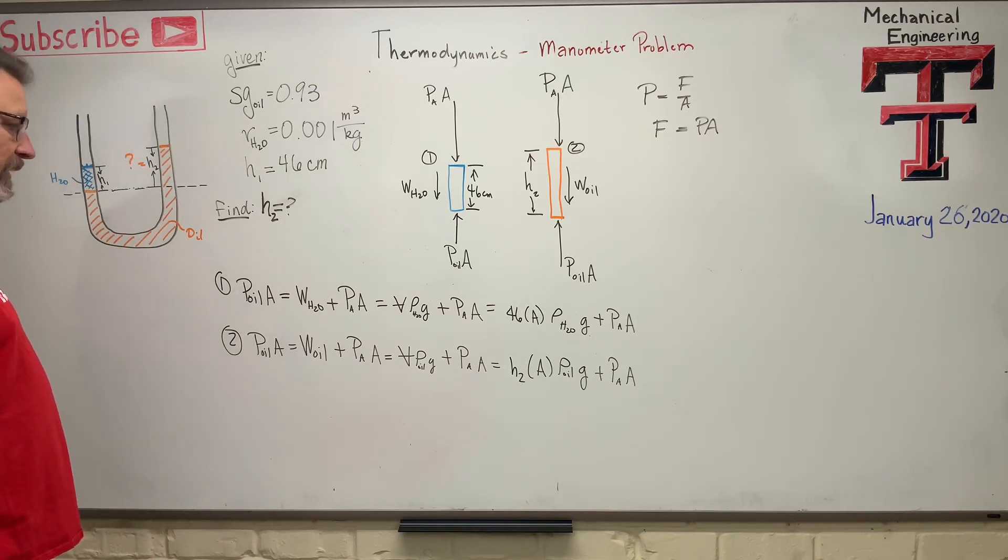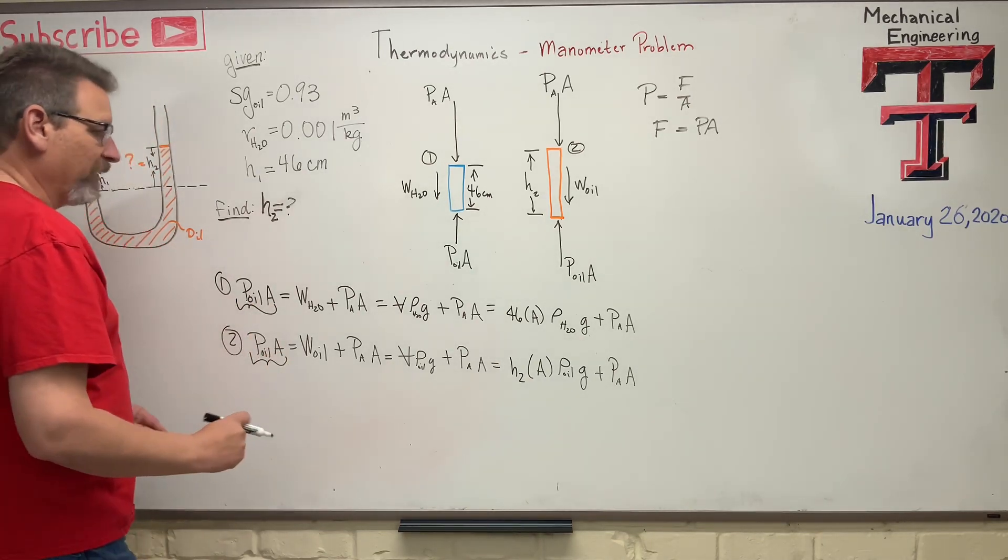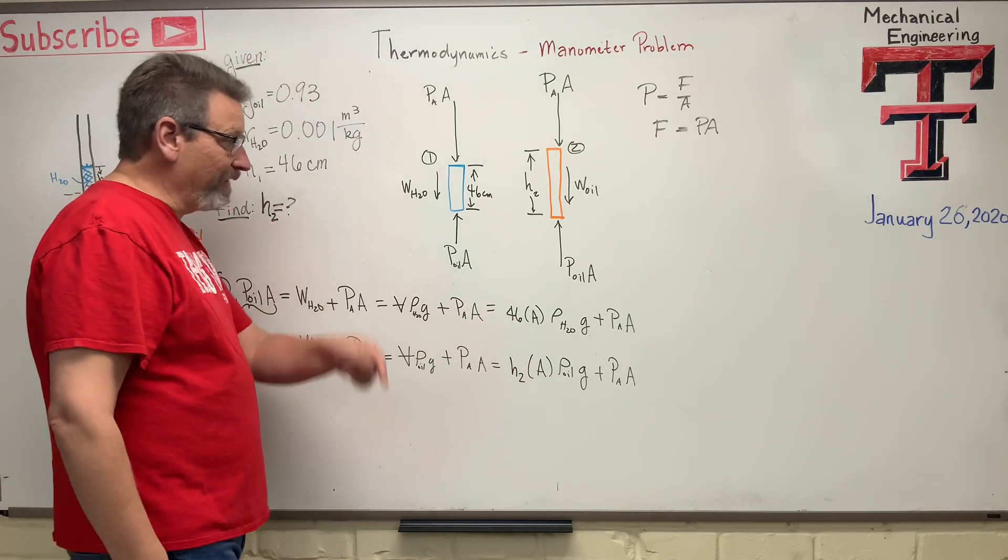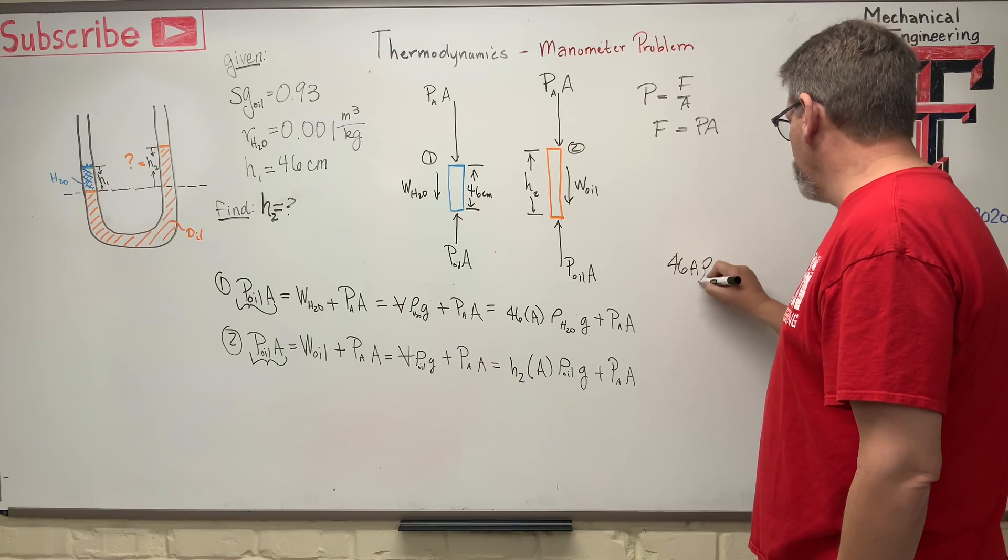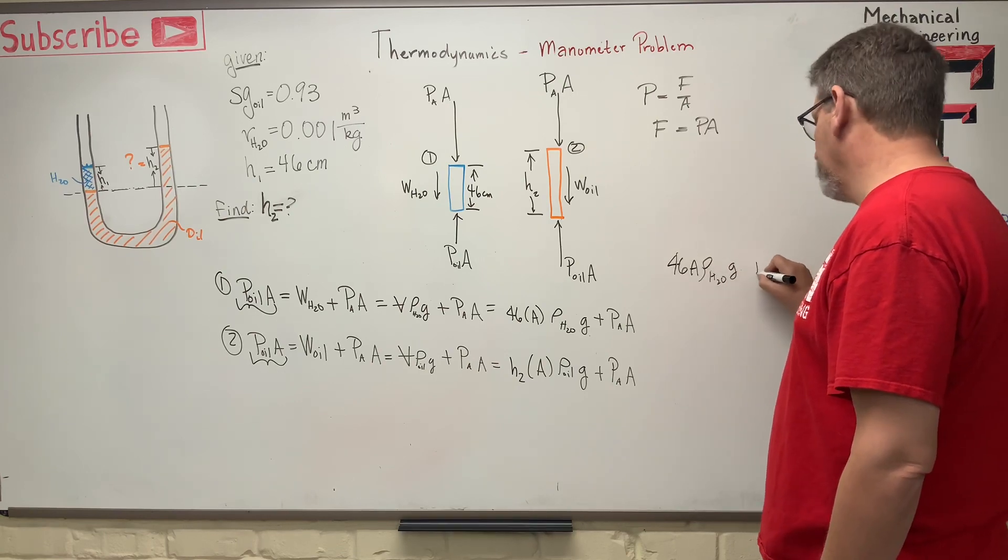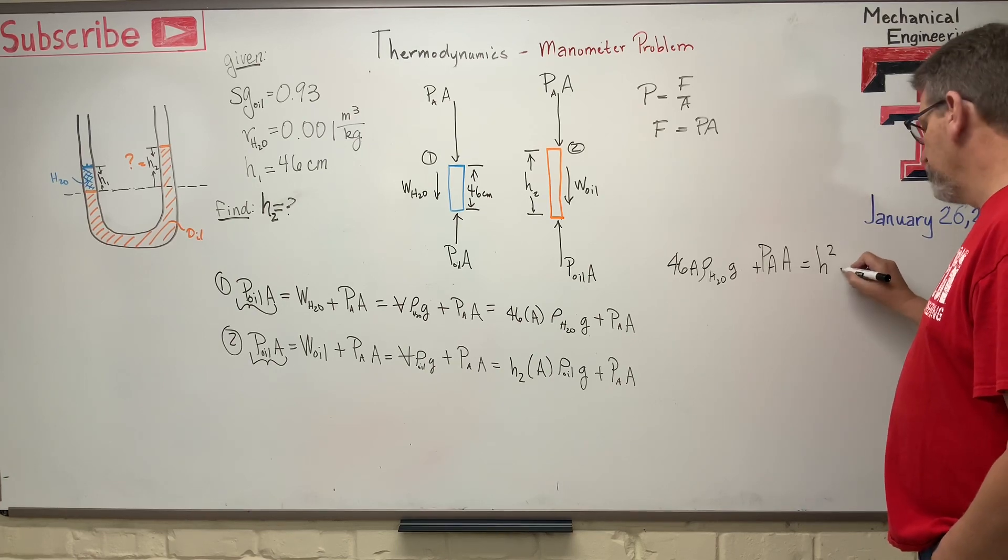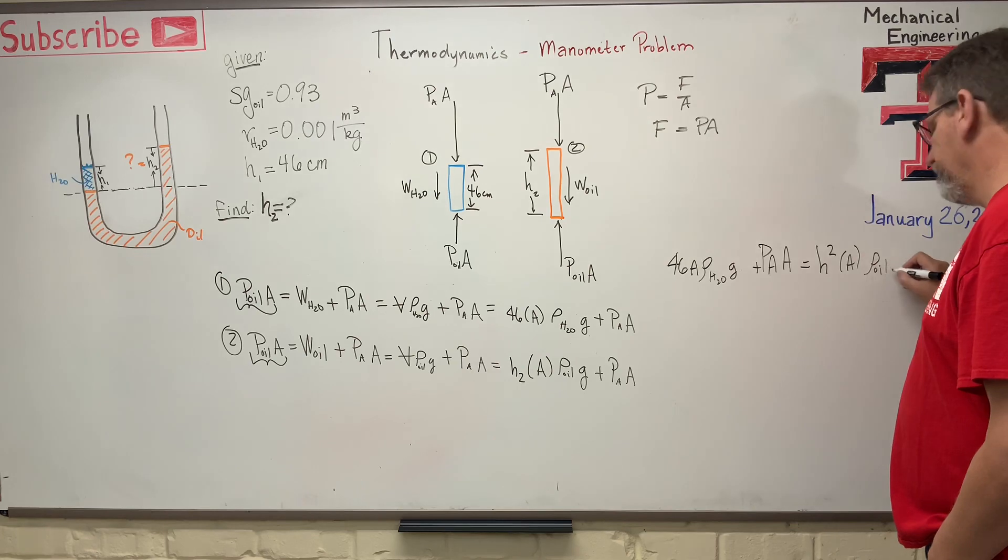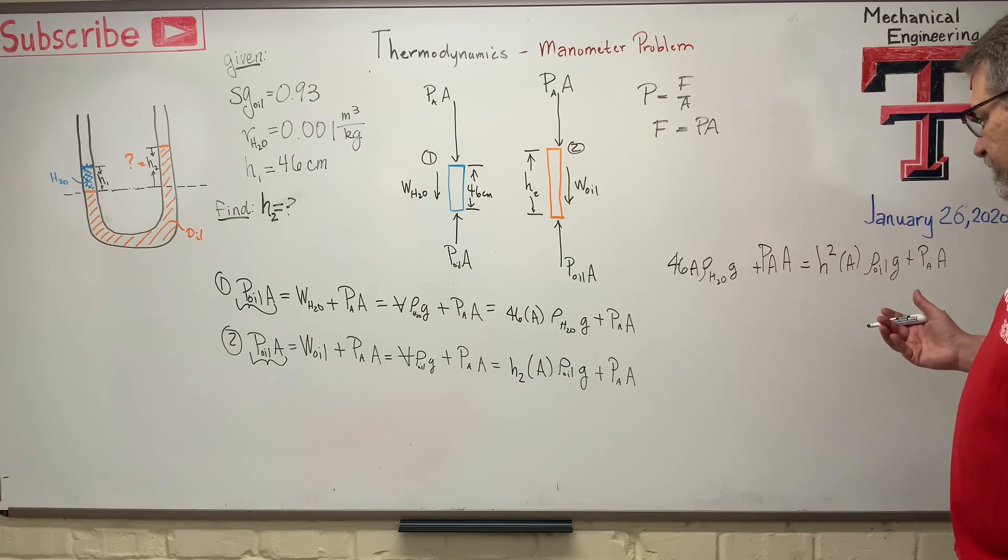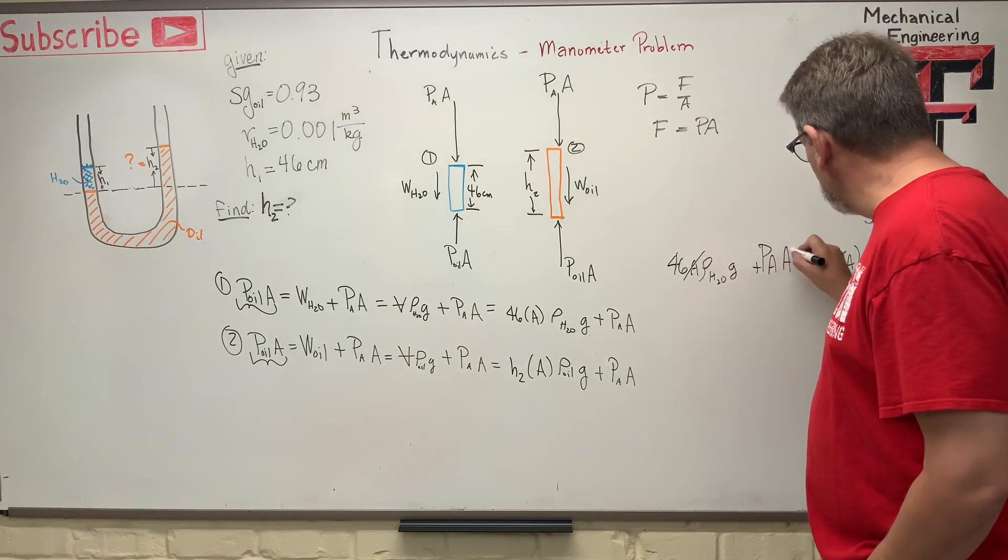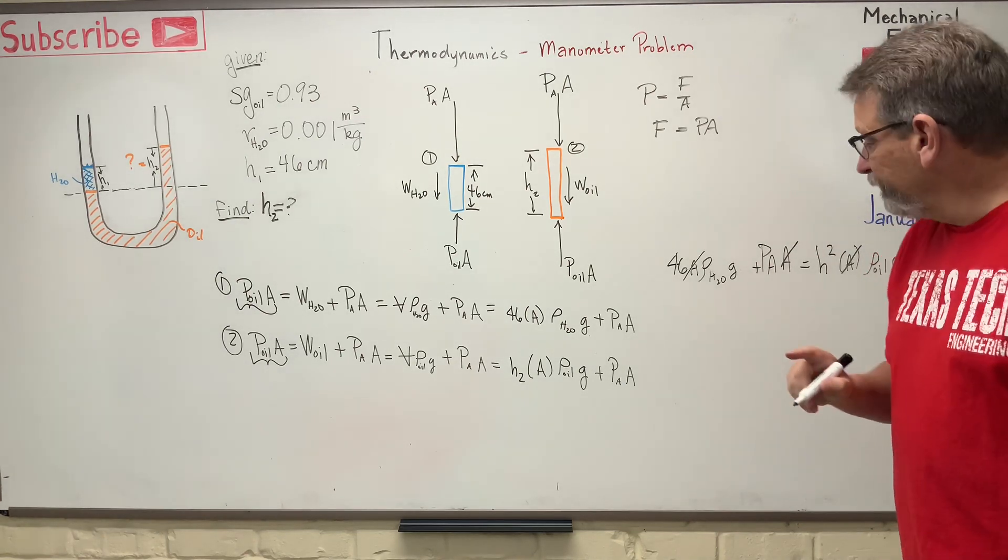Okay, I think we did pretty good. So we can take now, since both of these things are equal to P oil times A, right? We can take this equation and that equation and set them equal to each other. So let's try that. So let's go over here. So we have 46A rho H2O times G plus PA times A is equal to H2 times A rho oil times G plus PA times A. Okay, what can we do to simplify this? Okay, here's something simple. Every single term has an A in it. And the only way we were able to do that is because that area was constant all the way across there. It never changed, did it?